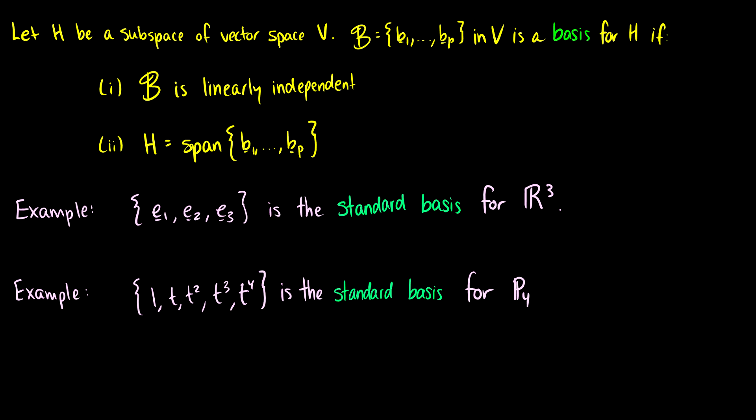Let h be a subspace of a vector space v. Then a basis b, containing vectors b1 through bp in v, is a basis for h if: first, b is linearly independent, and second, the basis spans all of the subspace h.